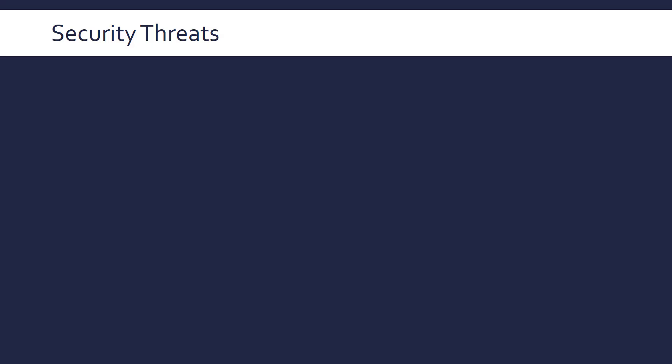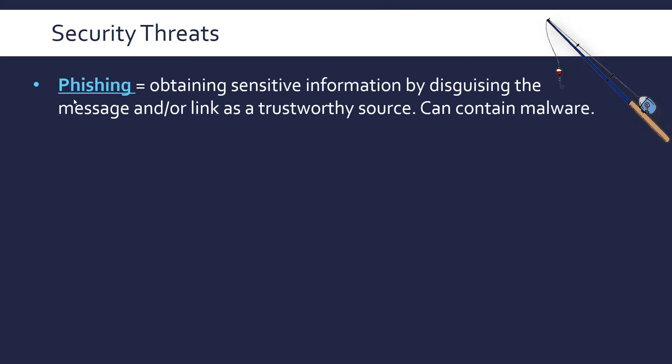We now need to cover some more security threats. A term that often comes up is phishing — it is based on fishing, where you're reeling someone in by disguising a message in order to obtain sensitive information. You get an email that looks like it's from your bank or your school, but it actually links to something quite different, potentially to malware. That's what phishing is.